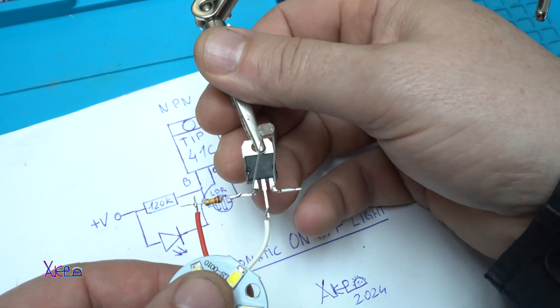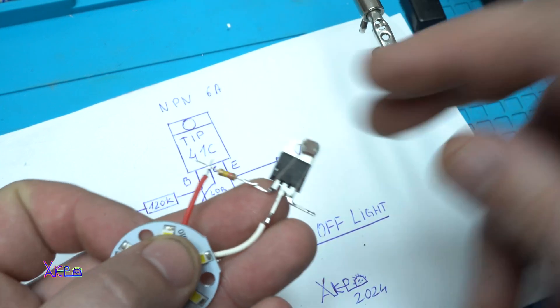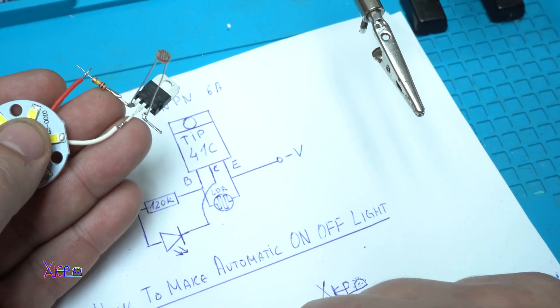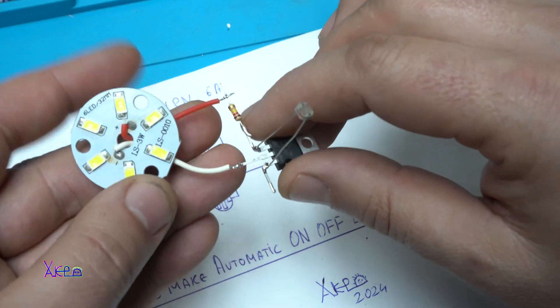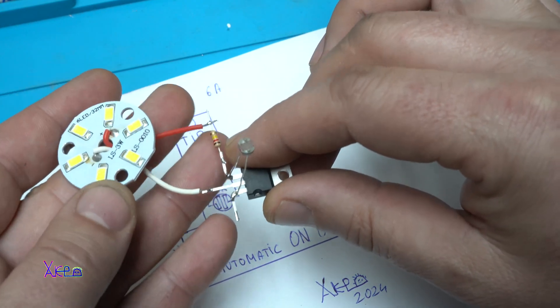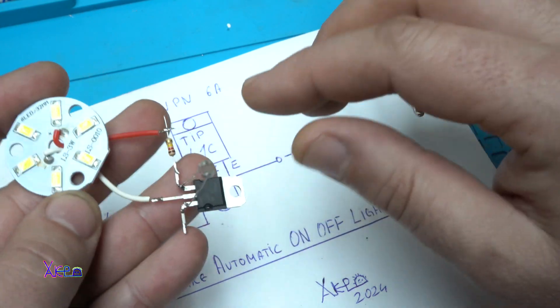Finished, simple as that. 3 components, automatic on-off light. You can use this for street light, and this is the simplest way how to make it.